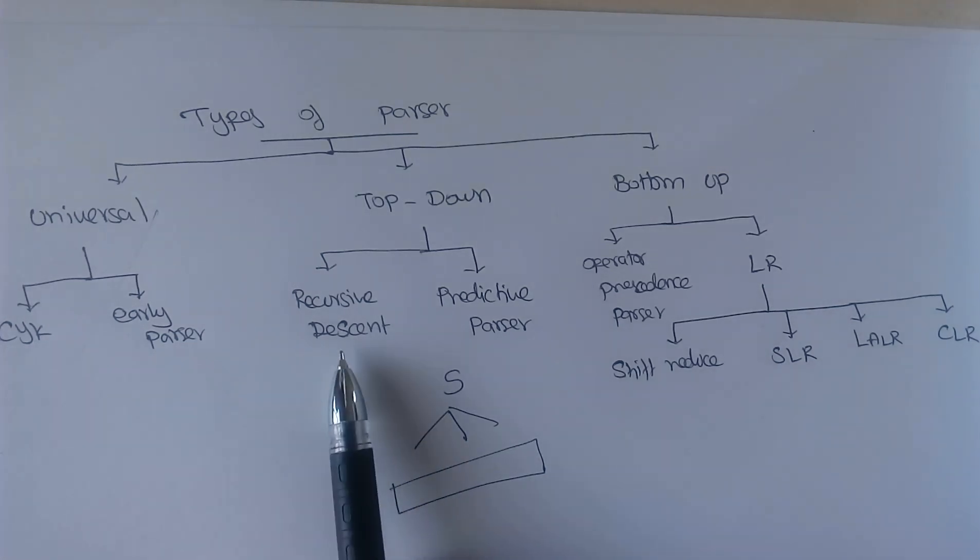In case of recursive descent parsing, it is very simple. We start with a starting symbol. Whatever is the production, we start comparing it with the input symbol. And whichever production matches, we substitute the production. And in case if something goes wrong in some of the steps, we backtrack it and do the remaining set of productions, remaining possibilities.